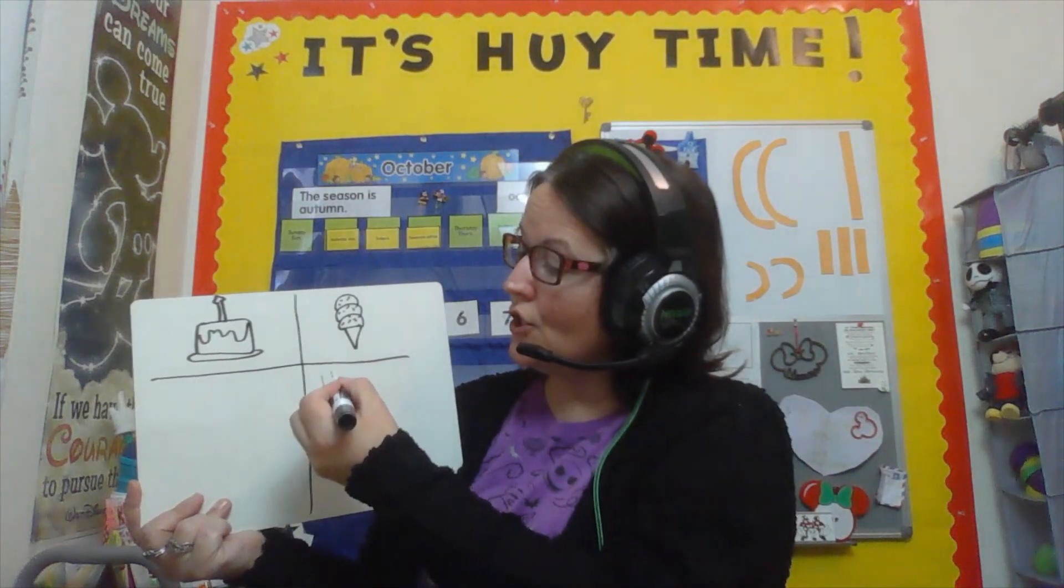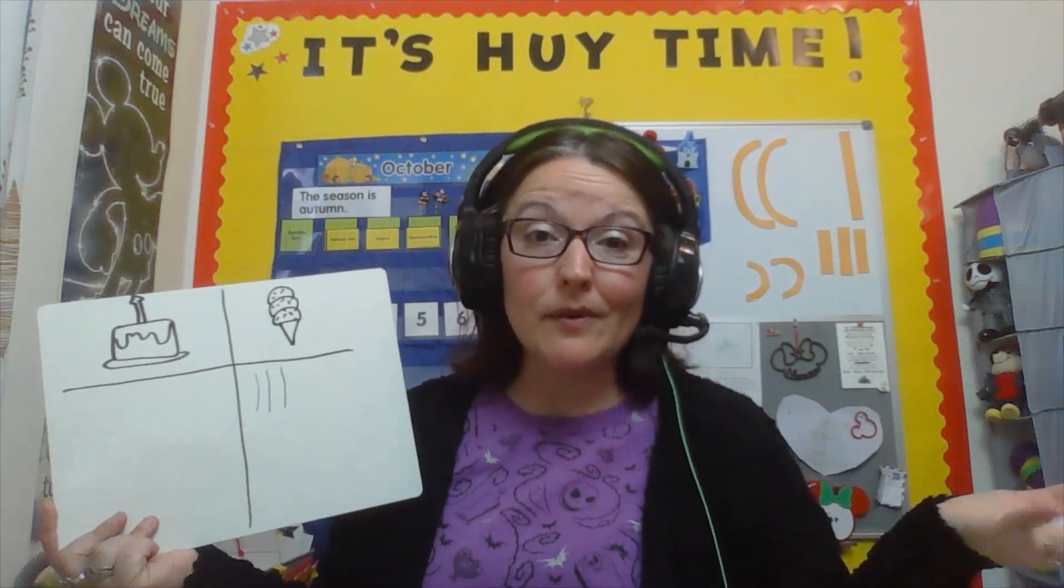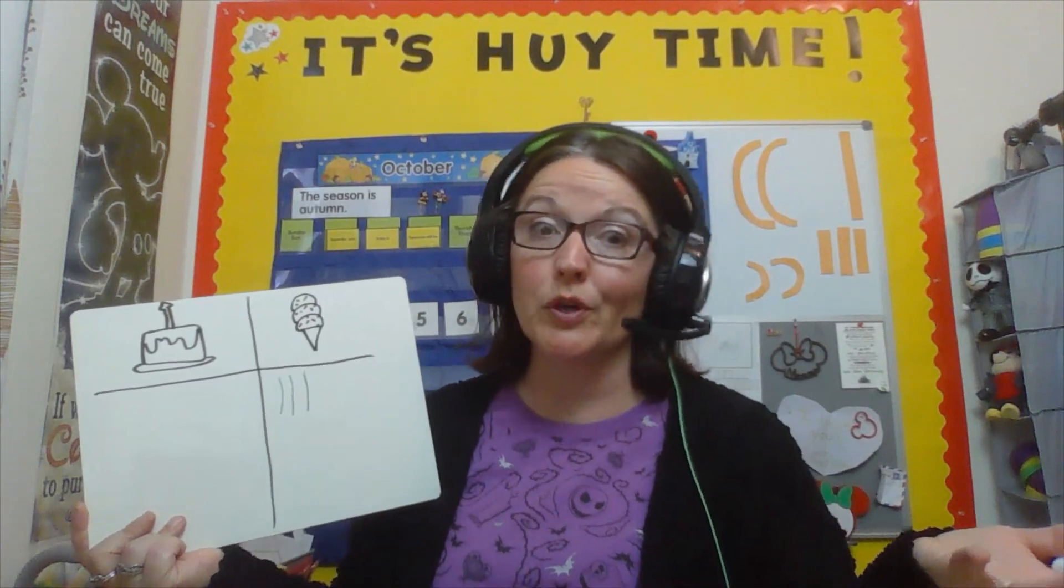Watch this. One, two, three. Those are tally marks. They're just straight lines. They look like number ones, but in this case, we're calling them tally marks because we're counting them.